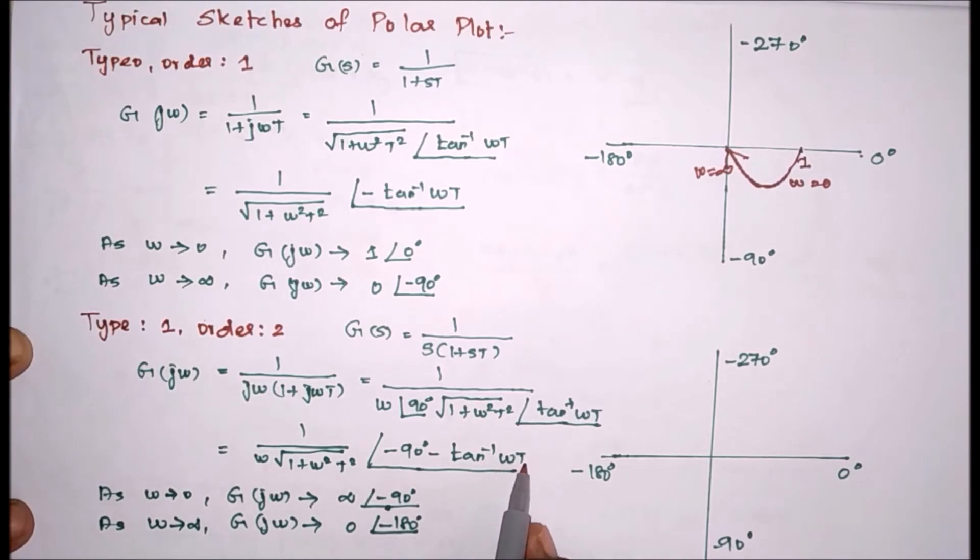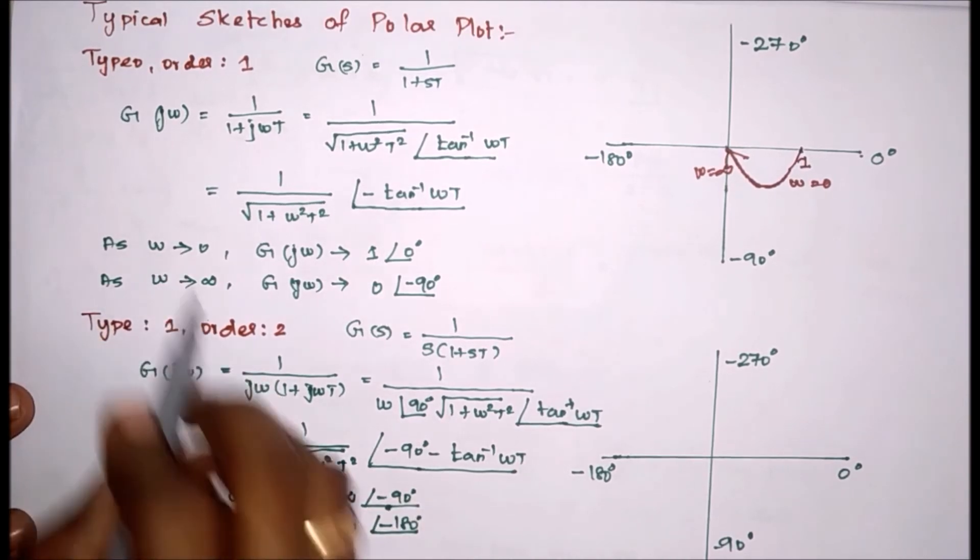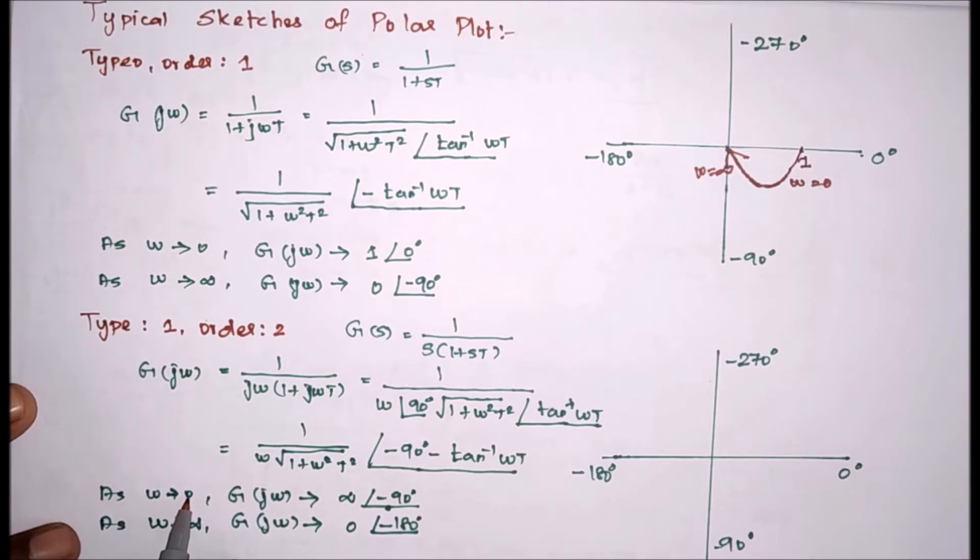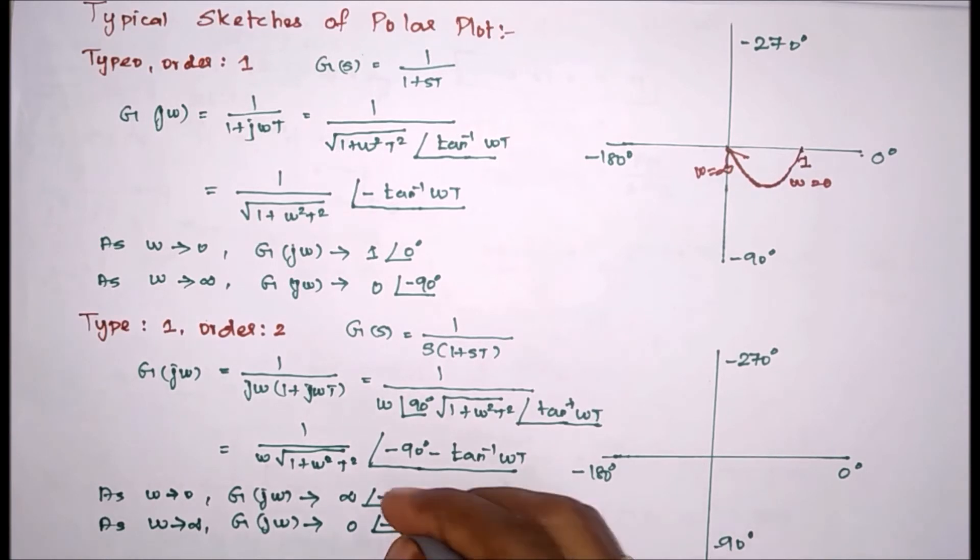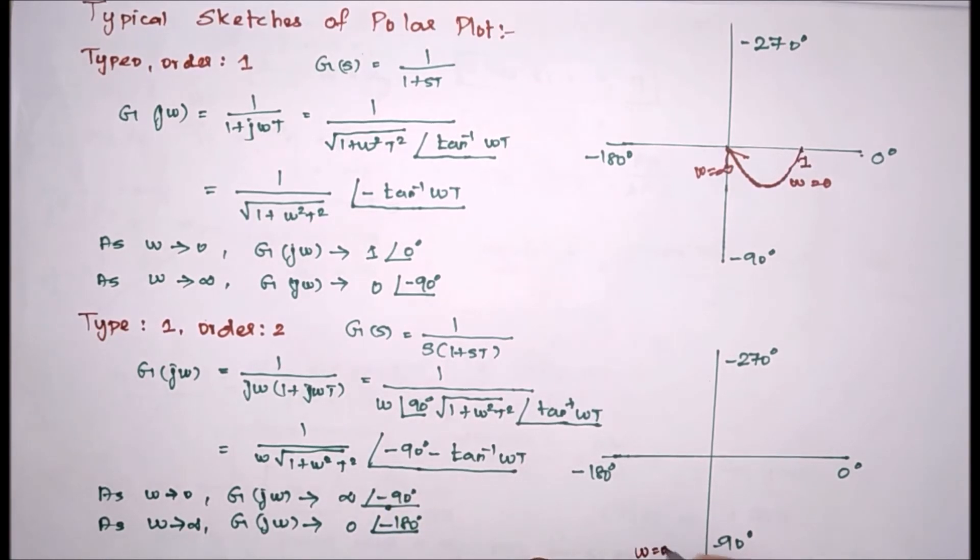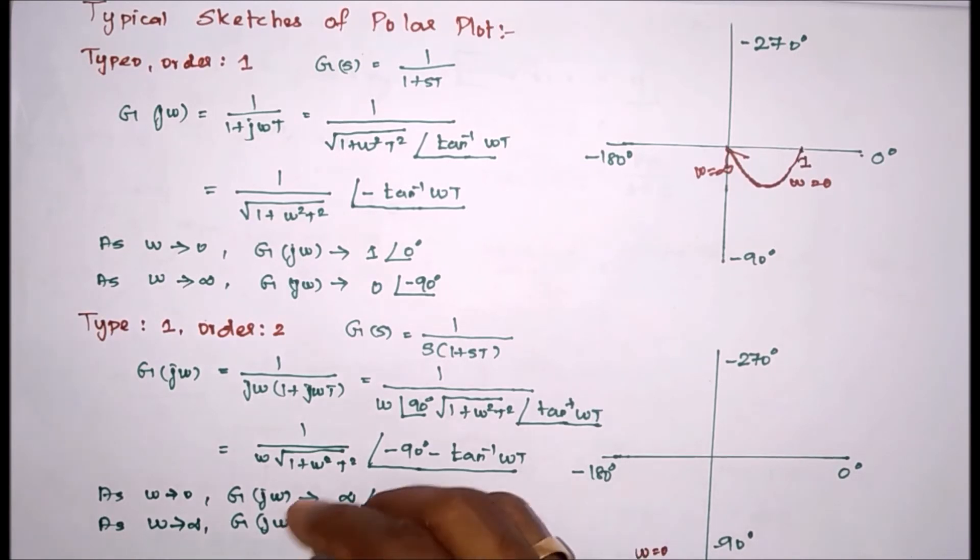So now same case. Like here we have to substitute omega equal to 0. If we substitute omega equal to 0, this part will become infinity, but angle if we substitute 0 this will become 0, but 90 degrees. Therefore at omega equal to 0 it will start infinity. Infinity means at 90, so starting is 90. At omega equal to 0 starting is 90, but we don't know where it starts. So it is infinity, therefore we can say this is the starting point.